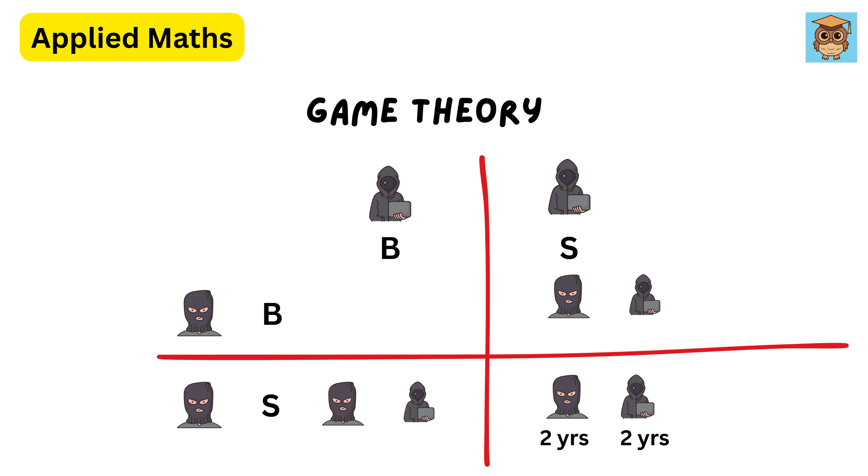If one betrays while the other stays silent, the betrayer goes free while the other gets a harsh punishment. If both betray, they both receive a moderate sentence. This dilemma highlights the tension between trust and self-interest, showing that rational individuals may act against collective benefit when they cannot communicate or trust each other.